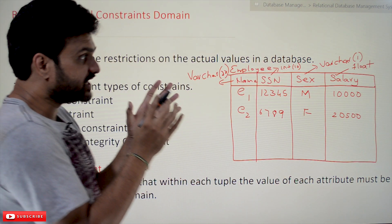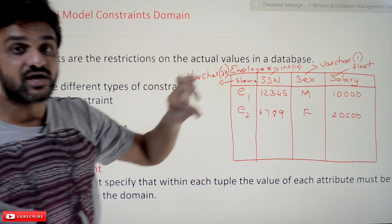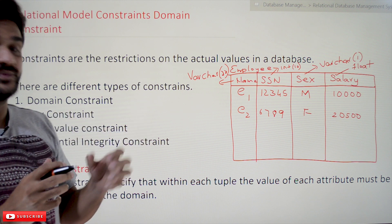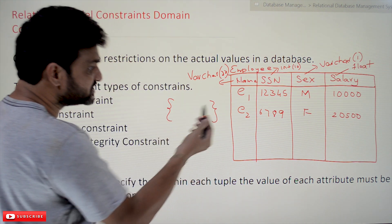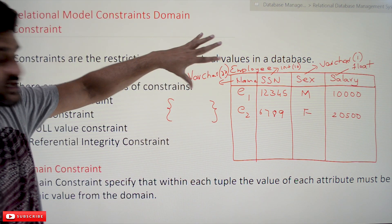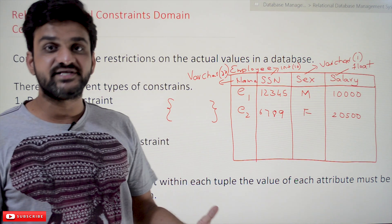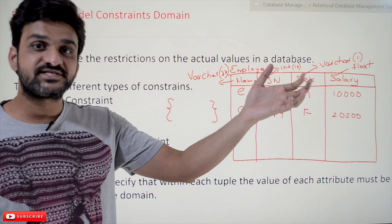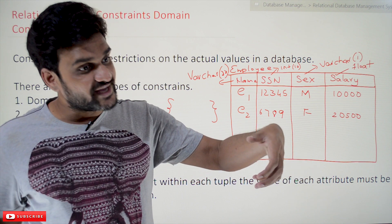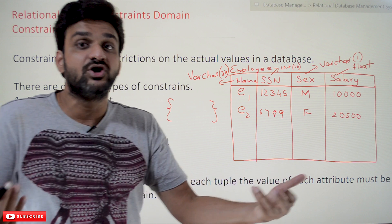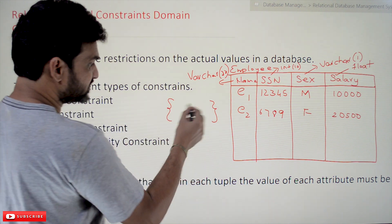These are the data types for the columns. What is meant by domain? Domain means the set of values from which the inserted values must come. For example, for SSN declared as integer, the set of integers ranges from minus infinity to plus infinity — all integers are within that set.